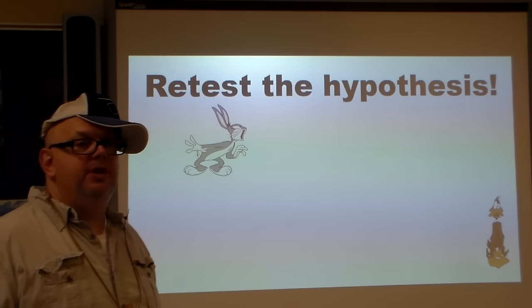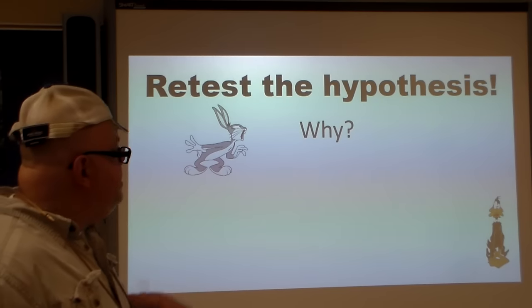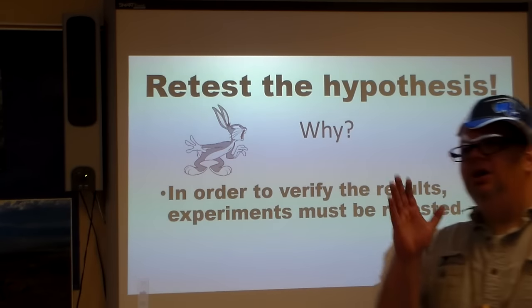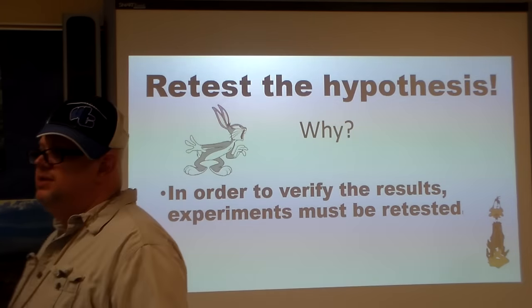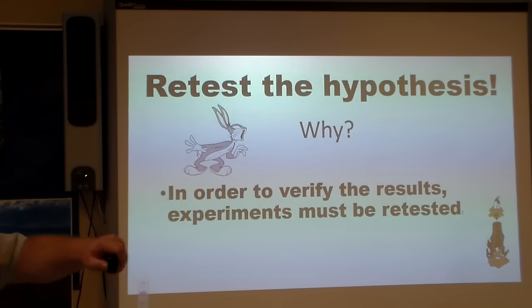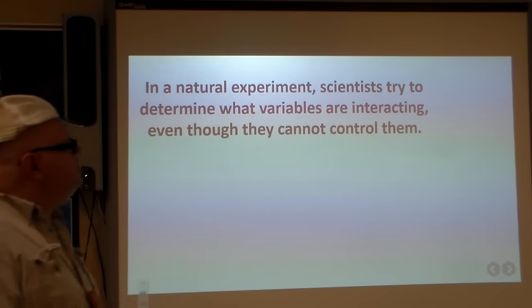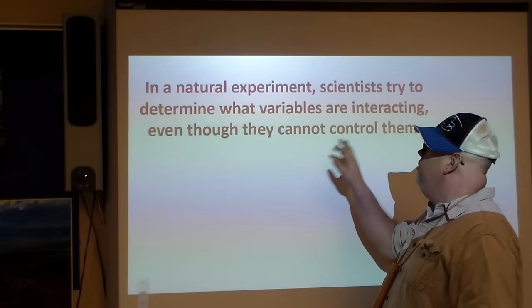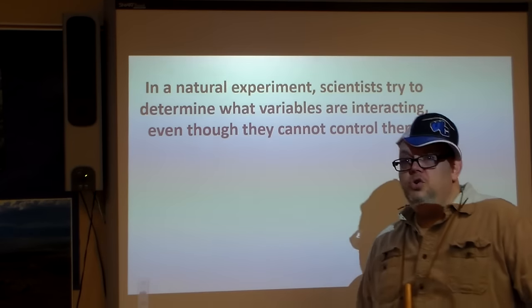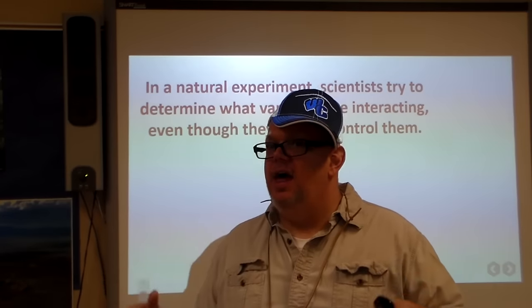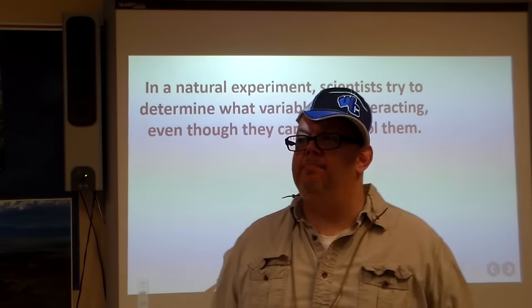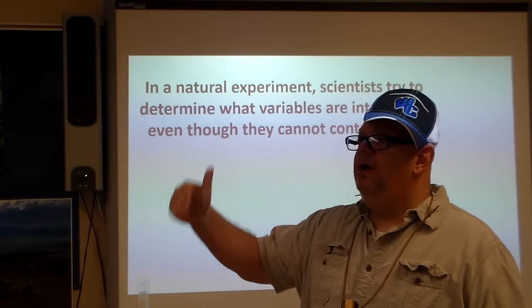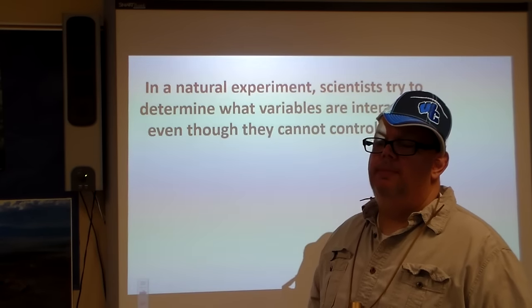Now we have to retest the hypothesis. We have to. Why is it that we need to do this? In order to verify the results, in order to make sure that the results are legitimate, the experiments have to be retested. That's just the way that it is. In the natural experiment, scientists try to determine what variables are interacting, even though they cannot control it. Contrary to popular ideas, scientists cannot control every single variable that's out there. It's just not happening. So there's some things you have to look at the experiment and see what variables we can't do anything about. We cannot control it.